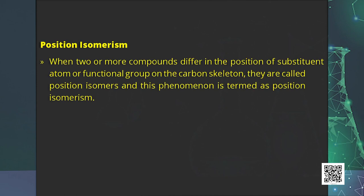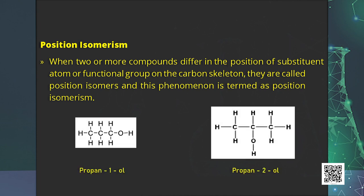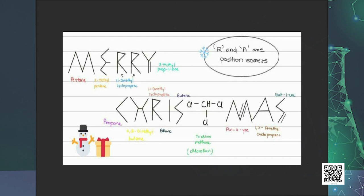Next is position isomerism. When two or more compounds differ in the position of a substituent atom or functional group on the carbon skeleton, they are called position isomers. An example is propan-1-ol and propan-2-ol. In this slide, a creative quote is formed using bond-line formula and position isomerism — alphabets A and R are position isomers of dimethylcyclopropane.